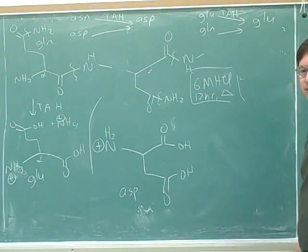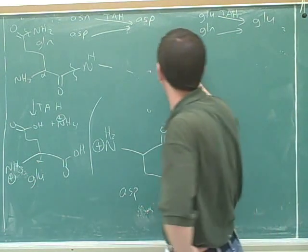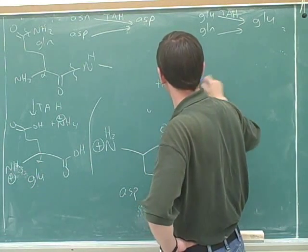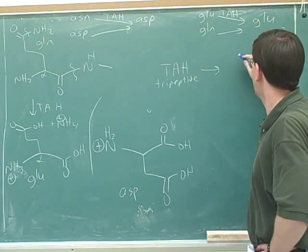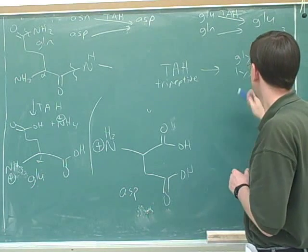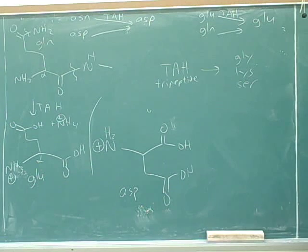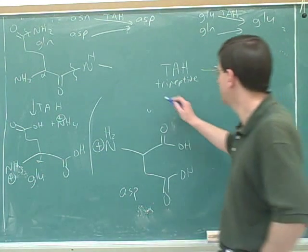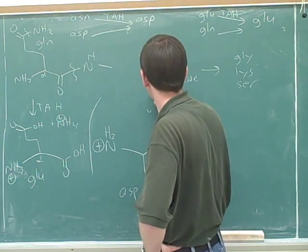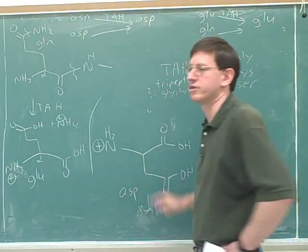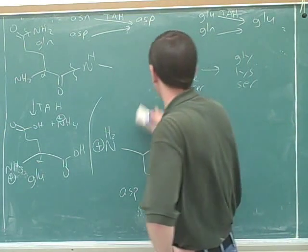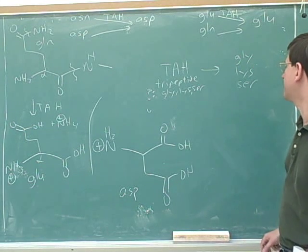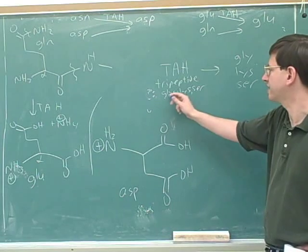Let's look at a simple example: you do total acid hydrolysis on a tripeptide and the computer tells you the products are glycine, lysine, and serine. What were the amino acids in the original tripeptide? The answer is glycine, lysine, and serine — although we don't know what order they were in yet. The total acid hydrolysis gave us those three, so we know the original tripeptide had glycine, lysine, and serine.